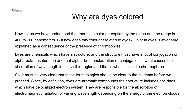It is the presence of chromophore along with auxochrome that creates the coloration in a molecule. Dyes are chemicals which have a structure, and the structure must have a lot of conjugation or alpha-beta unsaturation. That alpha-beta unsaturation or conjugation is what causes the absorption of wavelength in the visible region, and that is why it is called chromophore.